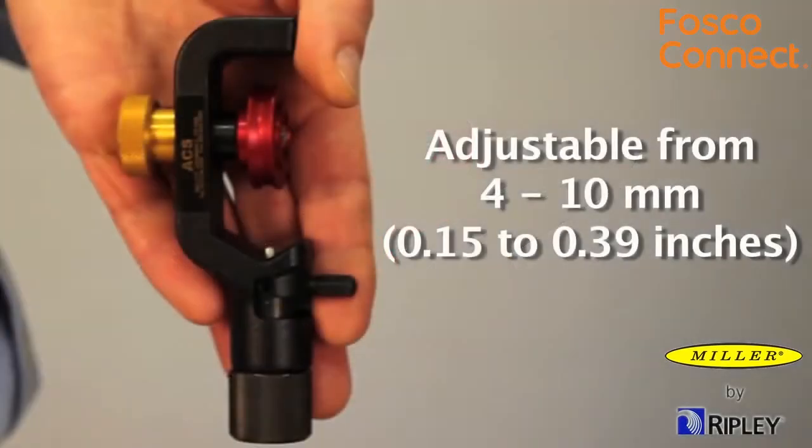The ACS2 tool is adjustable from 4 to 10 millimeters or 0.15 to 0.39 inches for smaller cable OD options.